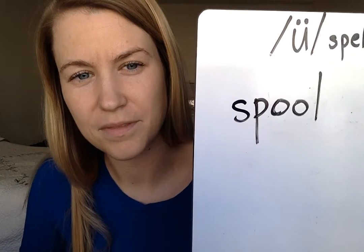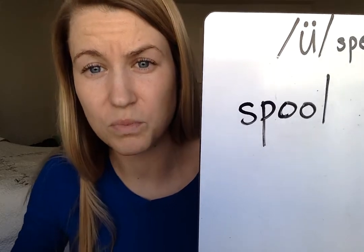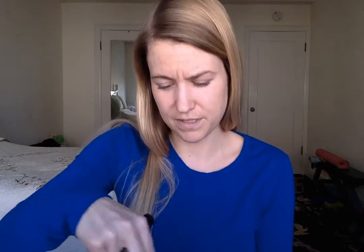Let's erase the T and put an SP — that spells 'spool.' You might not know what a spool is. It's how we wrap up yarn or string. If you've ever seen a ball of string, you could say it's a spool of string. I wish I could show you a picture, but I don't have one in front of me.